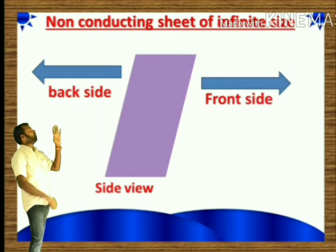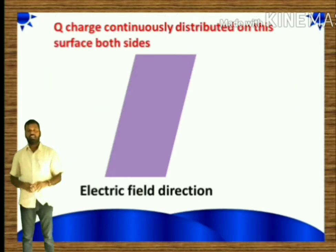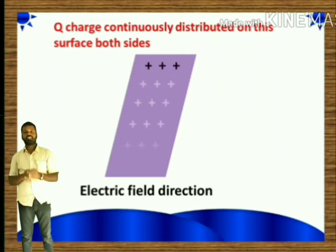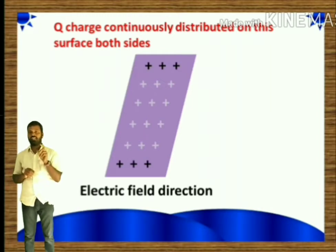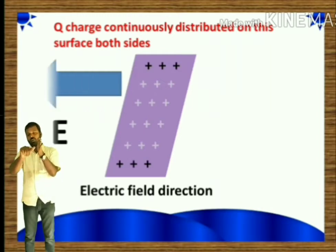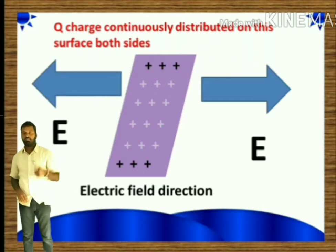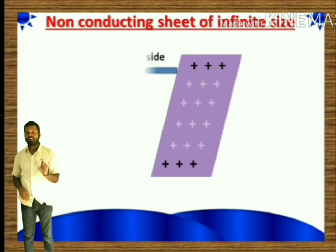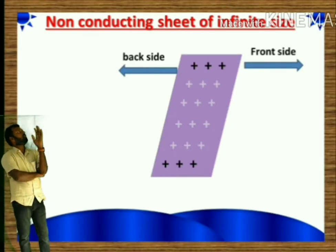Take this two-dimensional sheet on which charge Q is continuously and uniformly distributed on both sides — the back side and the front side. The electric field direction is always outward from the positive charge, so for the front side the electric field points outward, and for the back side likewise. Since charge is uniformly distributed, I will use surface charge density sigma.